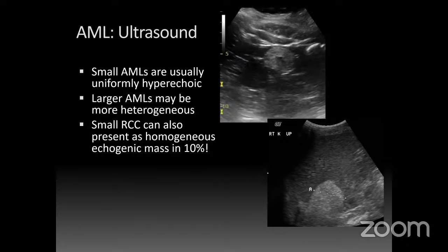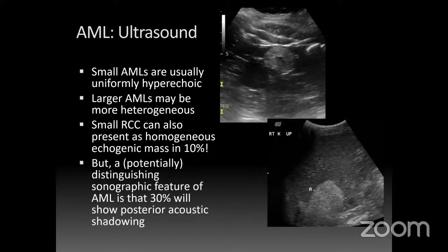About one-third of AMLs show posterior acoustic shadowing on ultrasound, which can point more towards AML rather than renal cell — though this feature isn't always helpful. In one case, a patient with tuberous sclerosis had an exophytic AML with posterior acoustic shadowing. Patients with tuberous sclerosis have a much higher propensity to form AMLs and they can be extremely large.